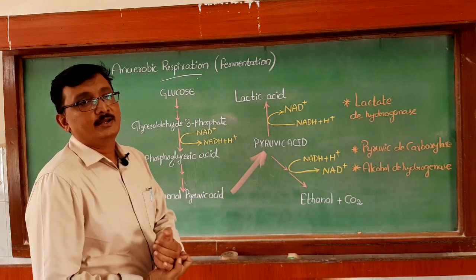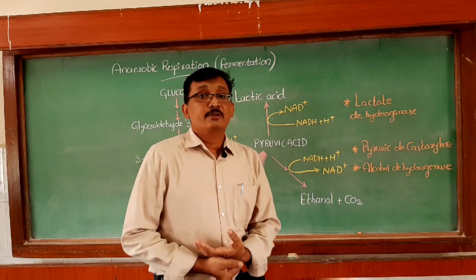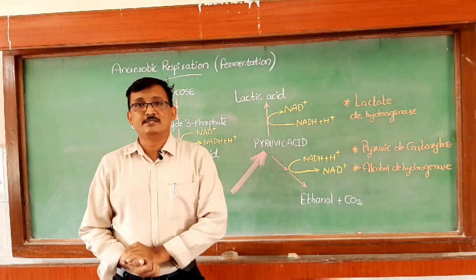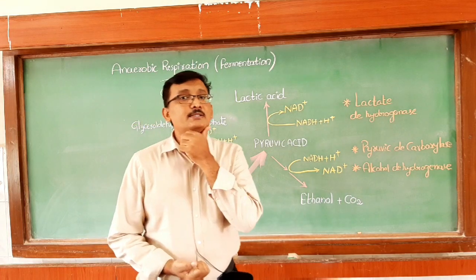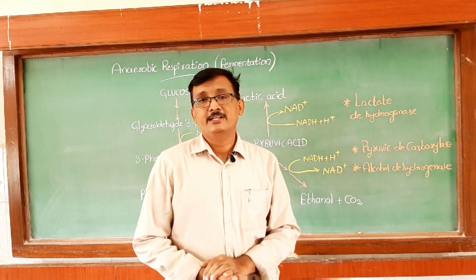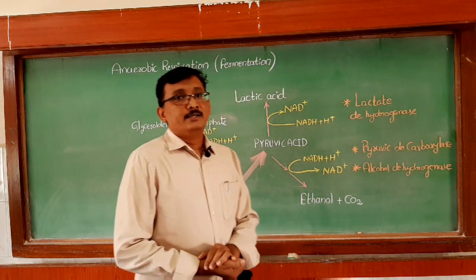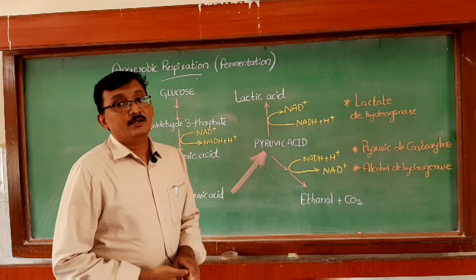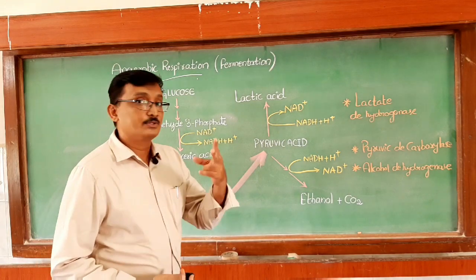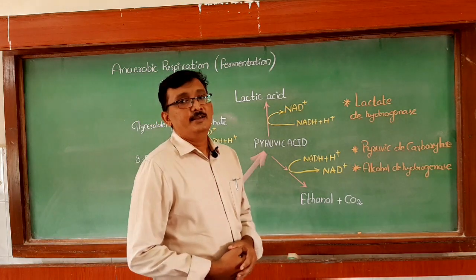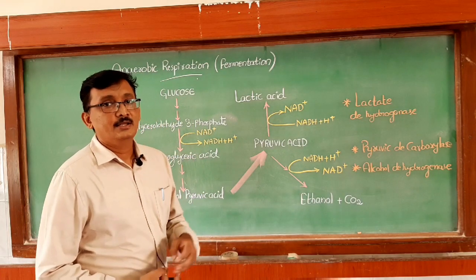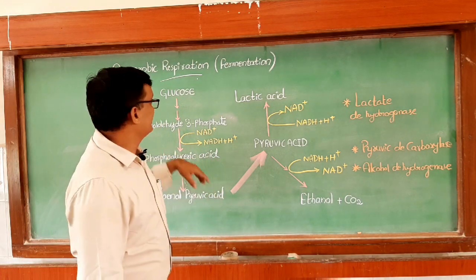It is also called as fermentation. We know that glucose, whenever it enters respiration, first it undergoes glycolysis, which is actually called as partial oxidation of glucose molecule, and it takes place in the cytoplasm. The result of glycolysis is the production of two pyruvic acid molecules, and each pyruvic acid molecule consists of three carbons, while glucose consists of six carbons.